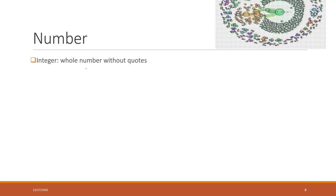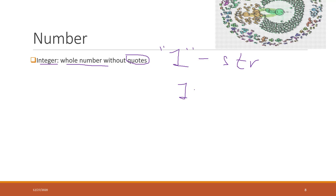Let's talk about numbers. There are two types of numbers. The first is integer — those are just whole numbers. When we declare a number in Python, we don't need a quotation mark. If you use a quotation mark, that will be a string. If you do not use a quotation mark, that will be an integer.